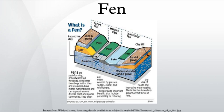Fens are usually fed by mineral-rich surface water or ground water. They are characterized by their water chemistry, which is pH-neutral or alkaline, with relatively high dissolved mineral levels but few other plant nutrients. They are usually dominated by grasses and sedges, and typically have brown mosses in general including Scorpidium or Drepanocladus.